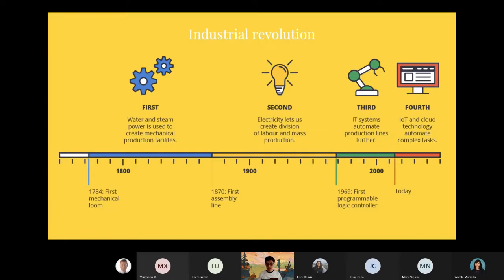For the third, we have the computers, IT systems, which generate automated production lines. And right now, we are at the so-called Industry 4.0, where we have IoT, cloud computing, machine learning, AI, and robotics.